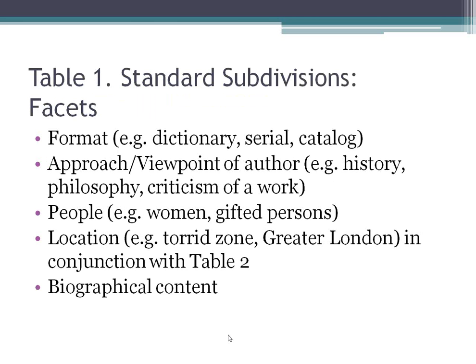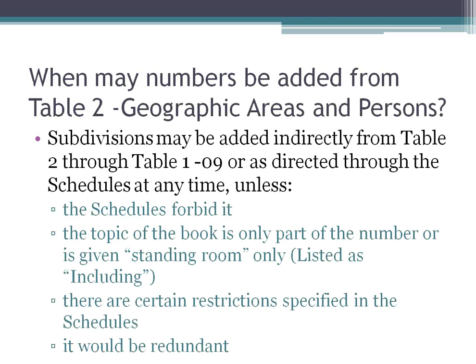In Table 1, topics are subdivided by things like format, approach, people, location, and biographical content. The 09 subdivision is for geographical areas and persons. Table 2 is also for geographic areas and persons, and it can only be used in conjunction with Table 1 — the 09 subdivision has to be added before you can add a subdivision from Table 2.